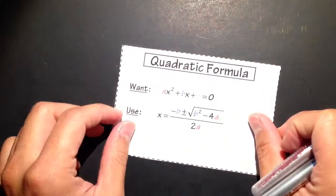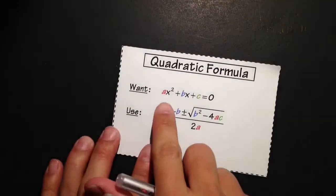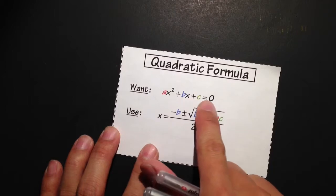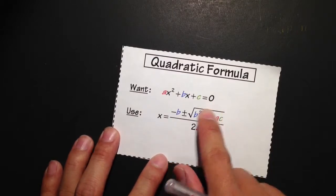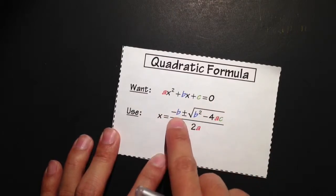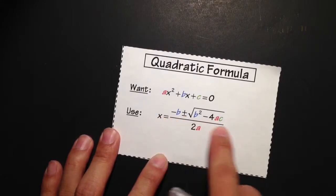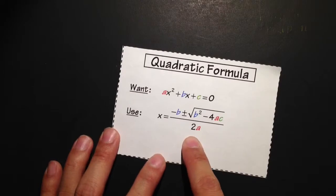Hi, I would like to introduce the quadratic formula. Whenever we have an equation in the form of ax squared plus bx plus c is equal to 0, we can always use the quadratic formula: negative b plus or minus square root of b squared minus 4ac, everything on the top, over 2a, to solve the equation for us.